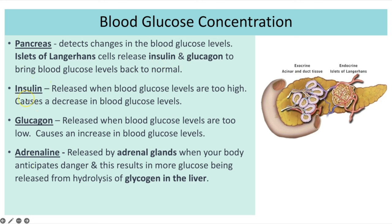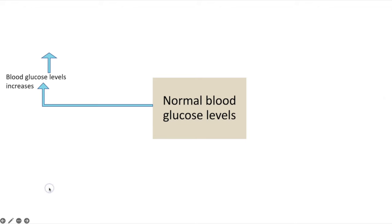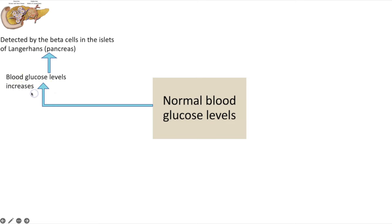Insulin is the hormone released when blood glucose levels are too high, causing a decrease in blood glucose levels. Glucagon is released when glucose levels are too low — a useful way to remember this is 'glucagon is released when the glucose is gone' — and it causes an increase in blood glucose levels. Adrenaline is not linked to homeostasis but also causes an increase in blood glucose levels, released when you are anticipating danger, having the same effect as glucagon.